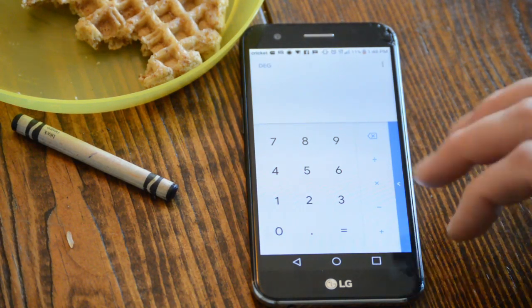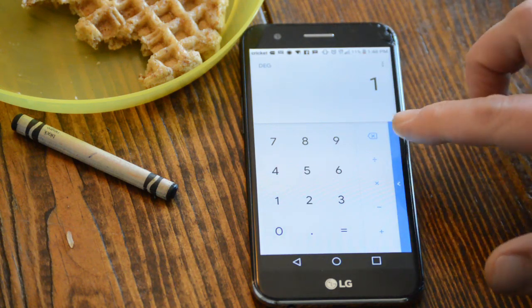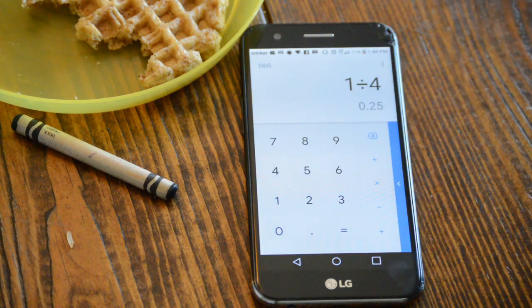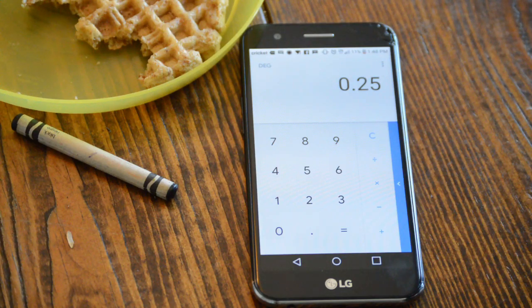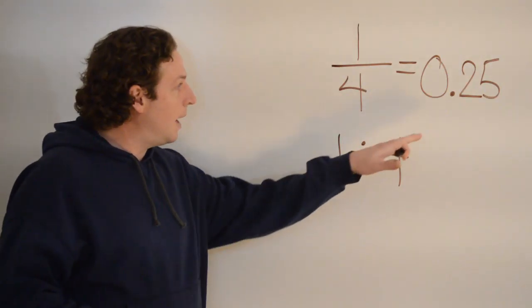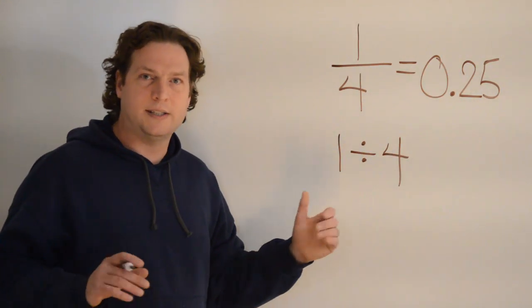Okay. We can just do one divided by four, and we get zero point two five. Okay. We got point two five. Works out in the calculator.